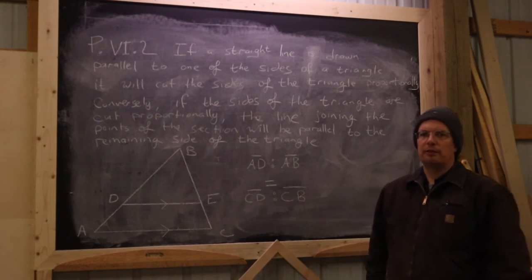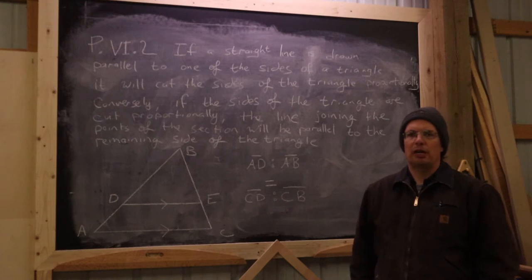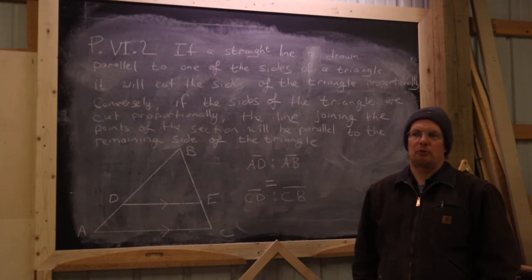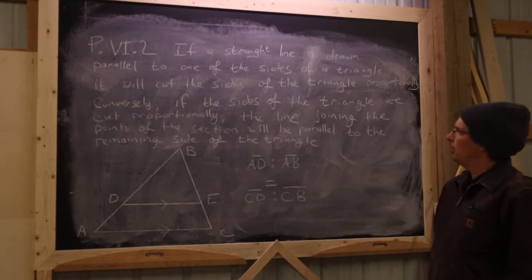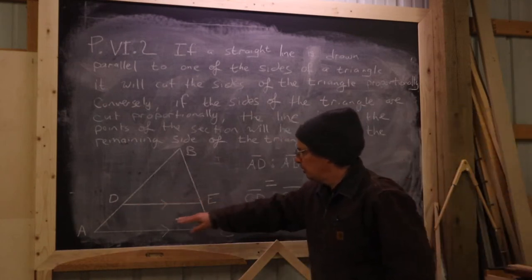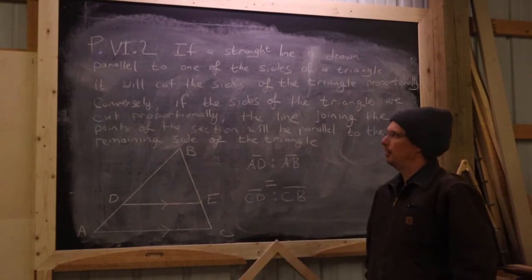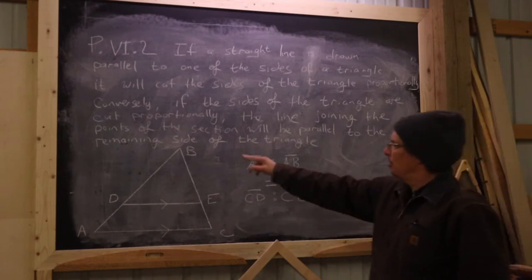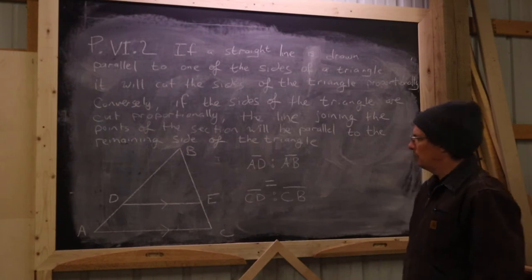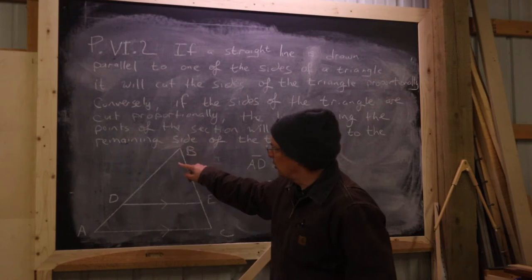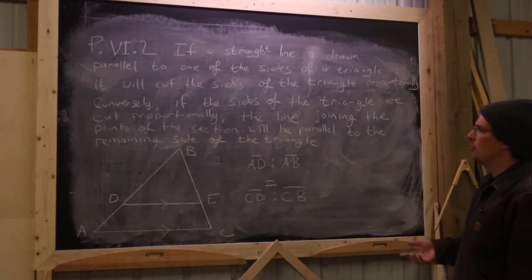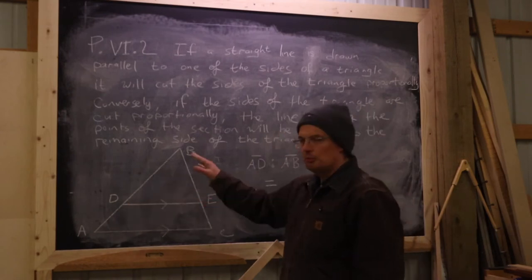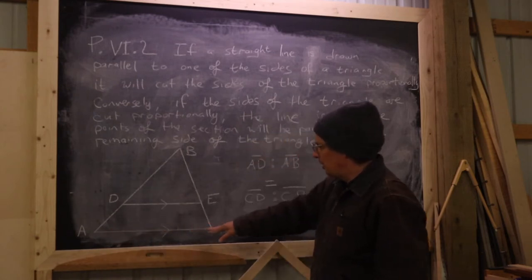The second proposition Euclid gives us in Book Six is one with far-reaching consequences for understanding how a sector works. It tells us that if a straight line is drawn parallel to one of the sides of a triangle — as DE is parallel to base AC here — then it's going to cut the other two sides of the triangle proportionally. The ratio between this length and the overall length equals the ratio of this length to the overall length of those two sides. Conversely, if a line cuts two sides of a triangle proportionately, then that line must be parallel to the third side.